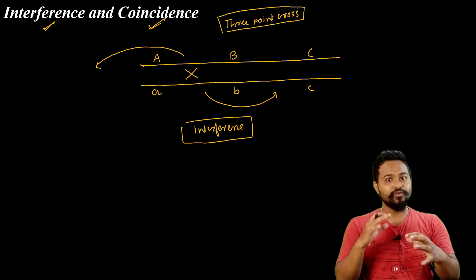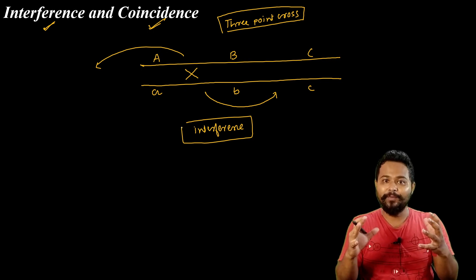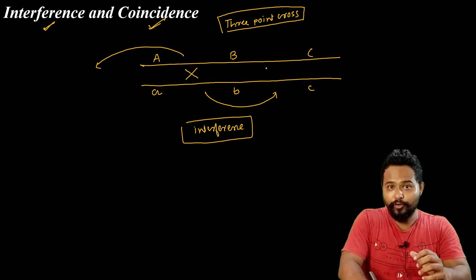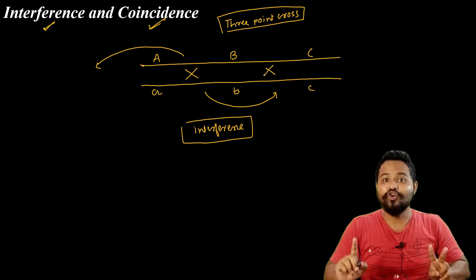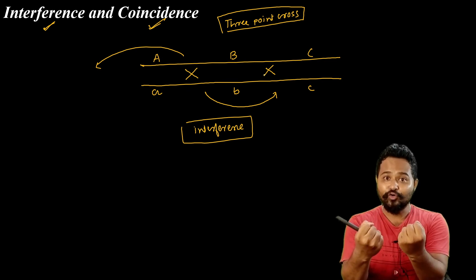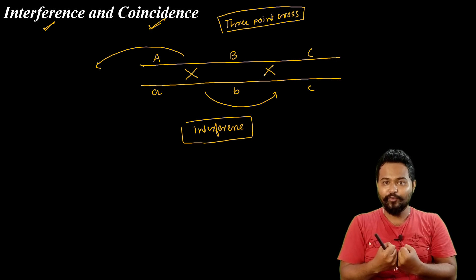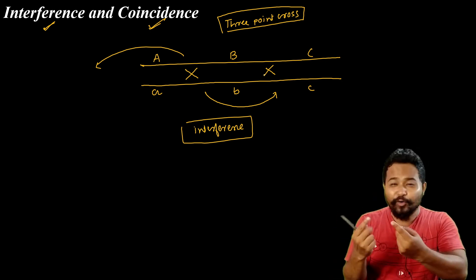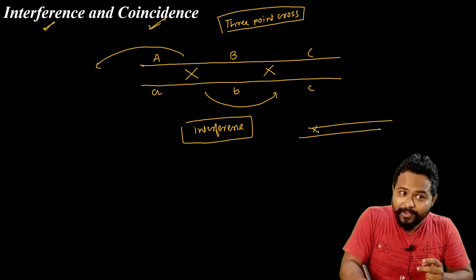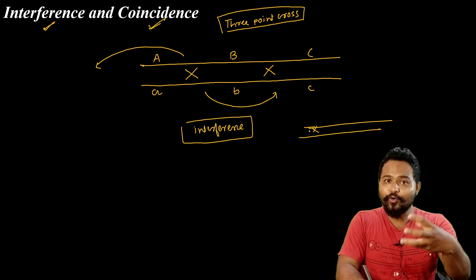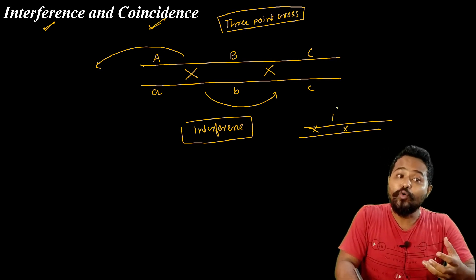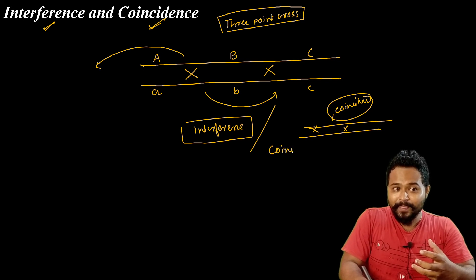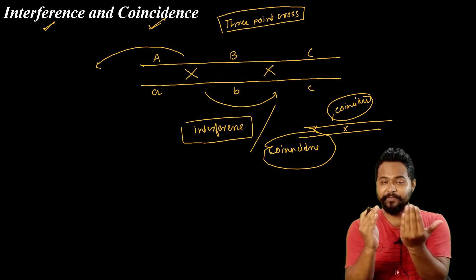Coincidence means the likelihood or chance that a double crossover does occur — it measures awareness of the actual double crossover events. This is the coefficient of coincidence, which captures how often double crossovers are actually observed. Interference and coincidence together describe the relationship between expected and observed crossover results.